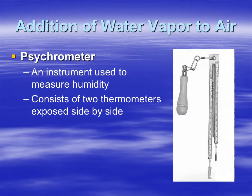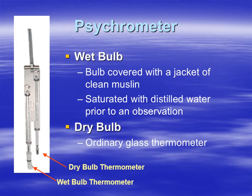The psychrometer is made up of two thermometers side by side, exposed to the air. One thermometer is called the wet bulb — it has muslin fabric at the bottom, saturated with distilled water, to ensure the water is pure. The other thermometer has no muslin and is called the dry bulb — it's basically an ordinary glass thermometer.